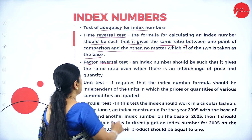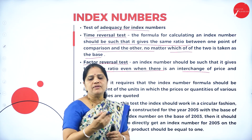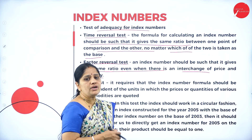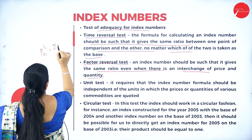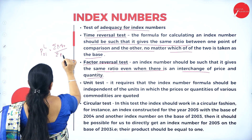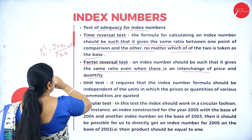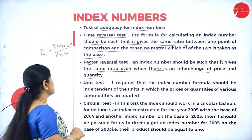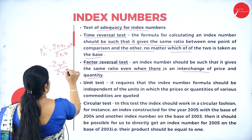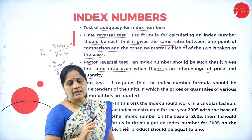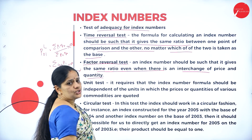The second test is the factor reversal test. An index number should give the same ratio even when there is an interchange of price and quantity. For example, for Laspeyres' index number: P01 = σP1Q0 / σP0Q0. The factor reversal test states that even if we interchange quantity with price — that is, σQ0P1 / σQ0P0 × 100 — both results should be the same.